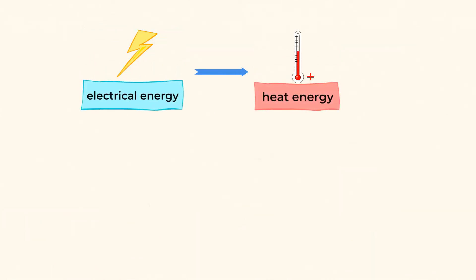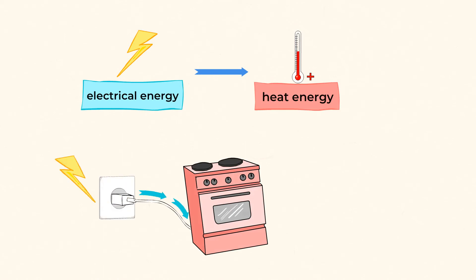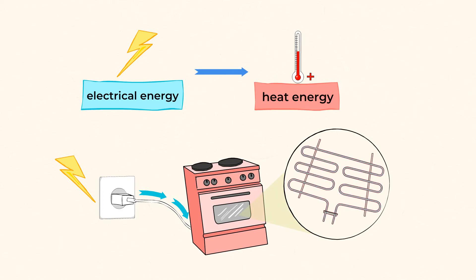Electrical energy can also be converted into heat energy. Think about an oven, for example. What happens when we turn on an oven? If it's an electric oven, turning it on opens up the flow of electricity to coils inside of the oven, causing them to heat up. That heat energy can then be used to bake delicious things like these cookies.